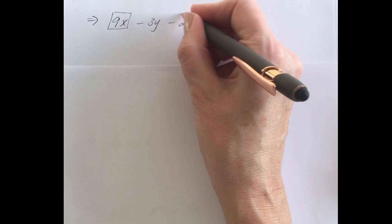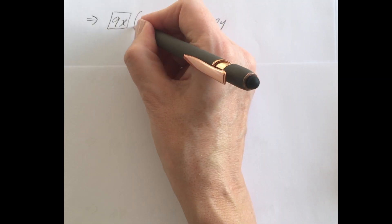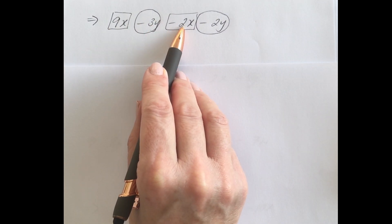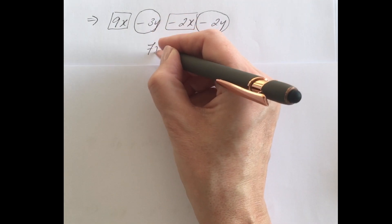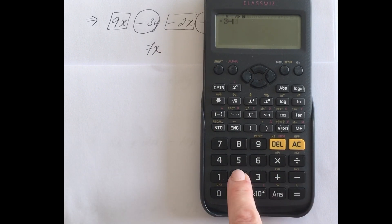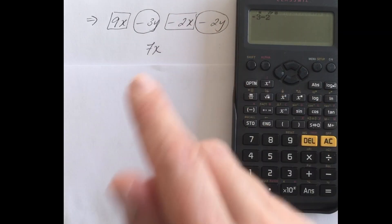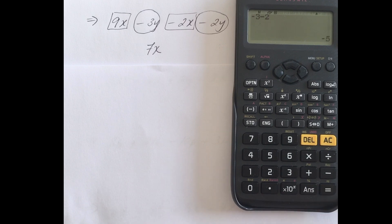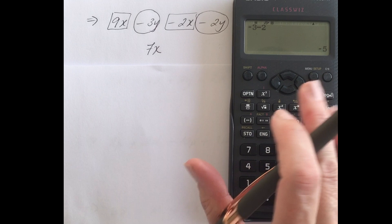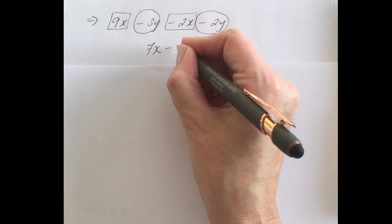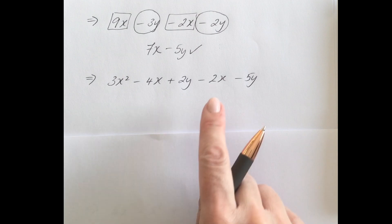Pause and try this one. I have 9x minus 2x — nine take away two is seven, so 7x. For the y terms: minus 3y minus 2y. Using the calculator: negative 3 take away 2 — you're down at three on the number line and taking away two, which takes you further down to minus 5. So that's minus 5y. Final answer: 7x − 5y.